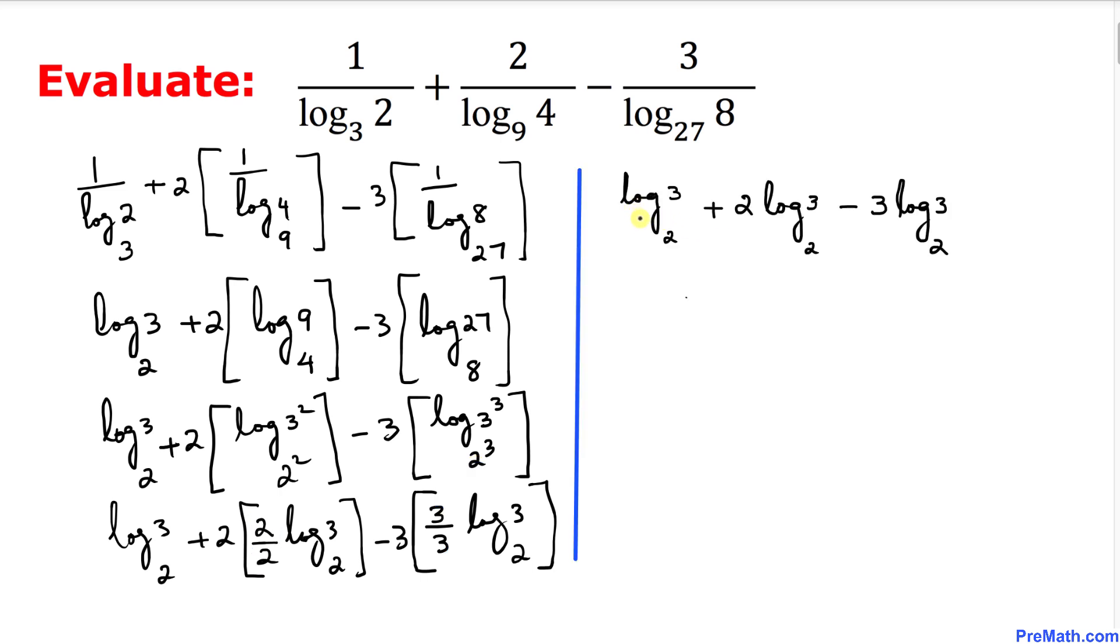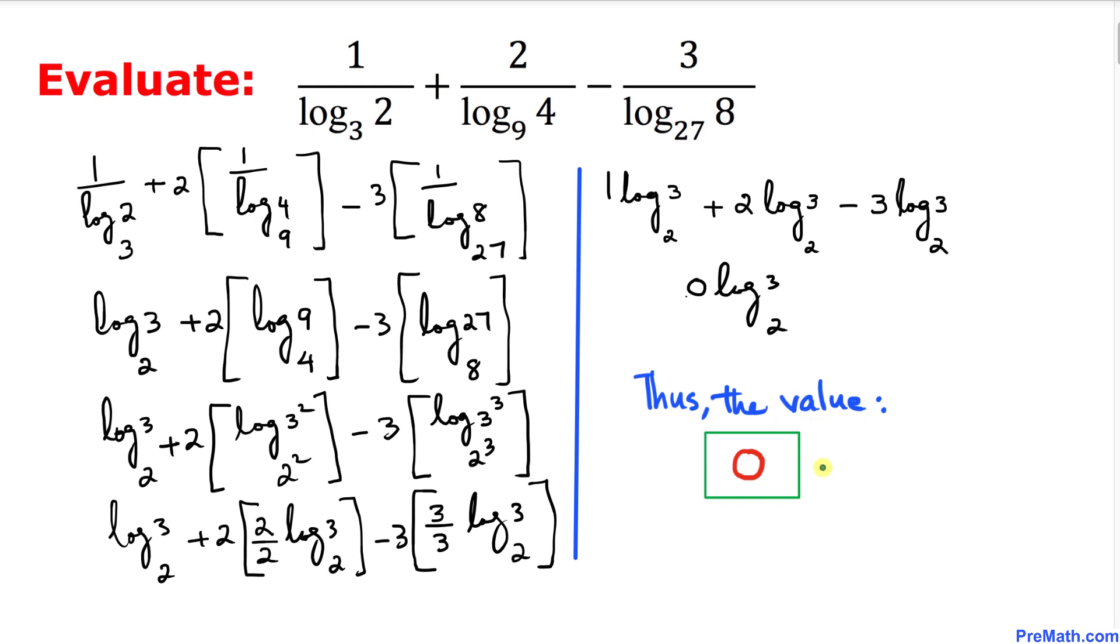So therefore I can write this log of 3 with a base 2 plus 2 times log of 3 with a base 2 and then minus 3 times log of 3 with a base 2. And now we can see we have 1 log plus 2 minus 3 is going to give us 0 log of 3 with a base 2, means our answer is simply 0. Thus the value of this expression turns out to be simply 0.